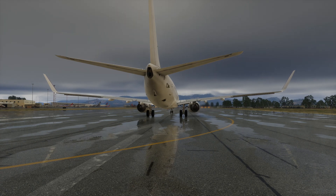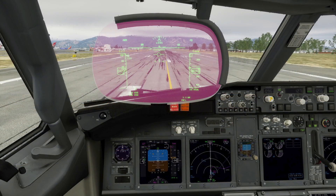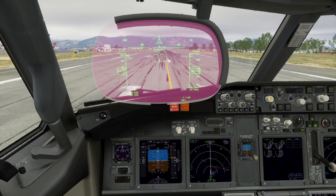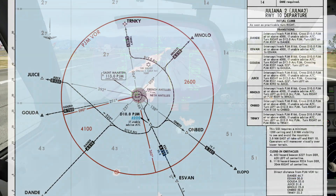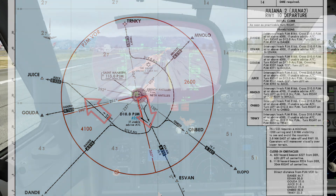The rain on the runway looks incredible. We'll take off from runway 10 and then fly the Juliana 2 departure to JUS. The departure is an interesting one, which includes flying part of an arc on the way to JUS.